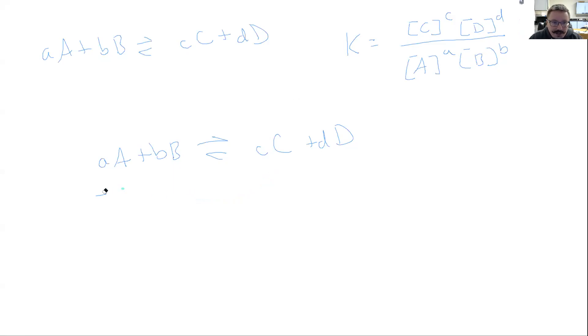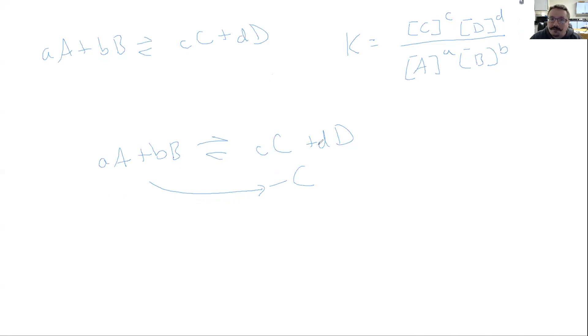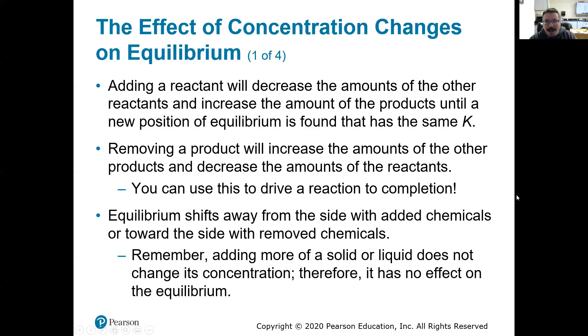If we remove a product, it's going to pull the reaction in the direction of that product that we removed. So removing a product shifts the reaction towards the product side — the forward direction. And none of those concentration changes will have any effect on the equilibrium constant K.